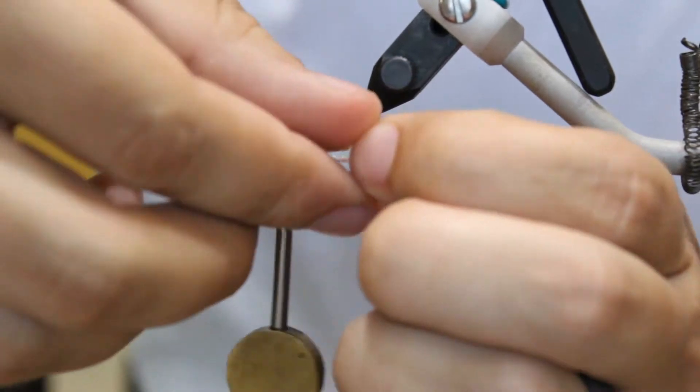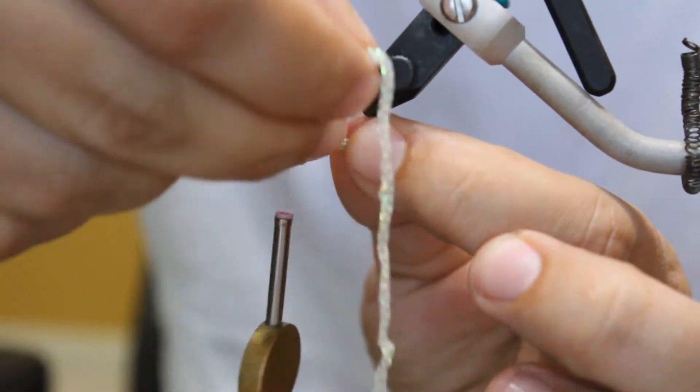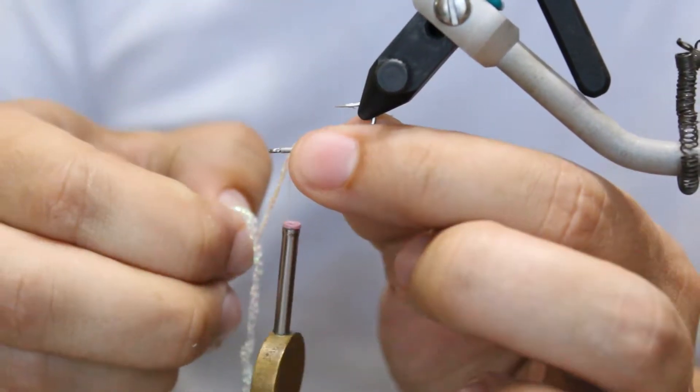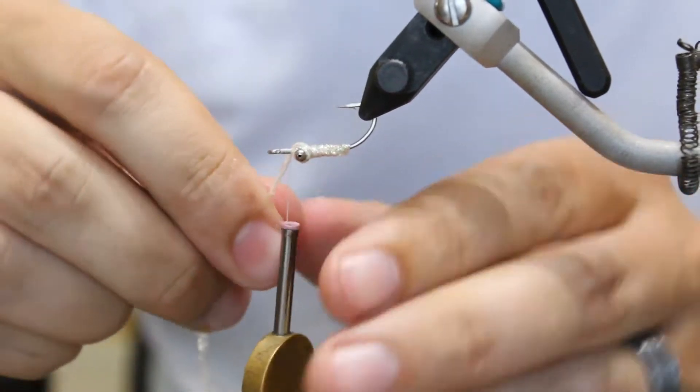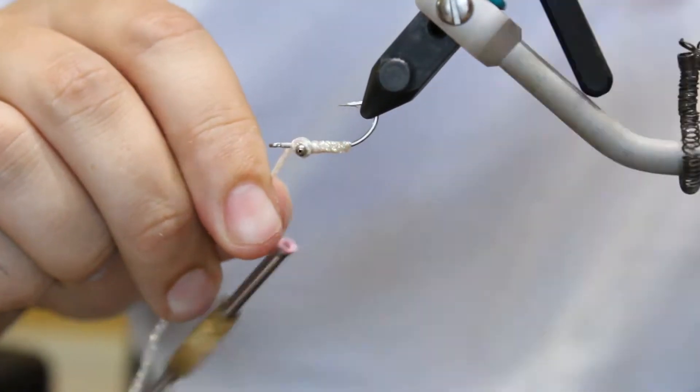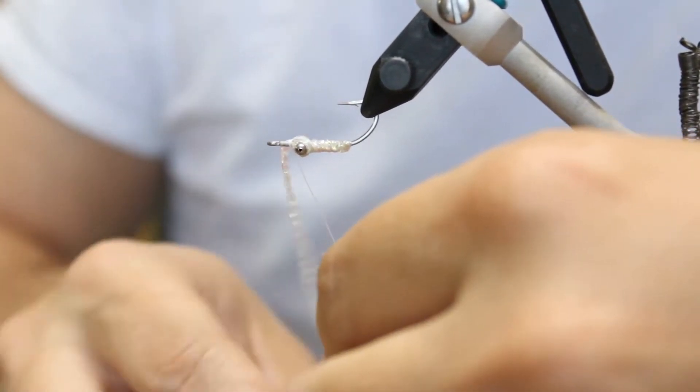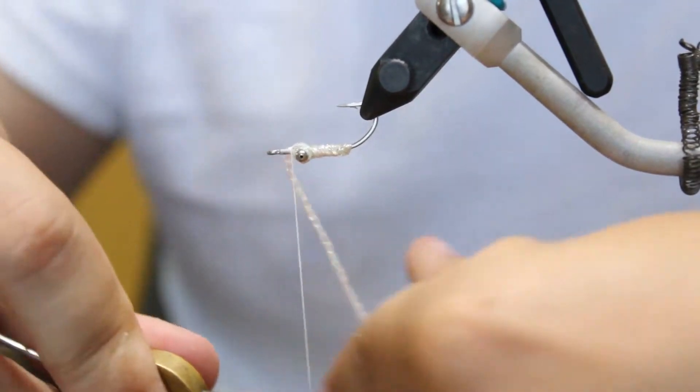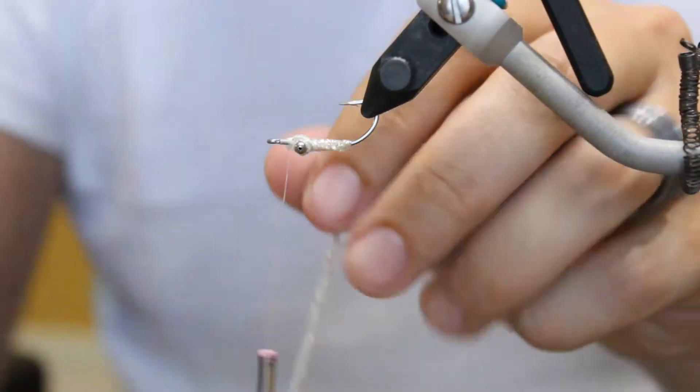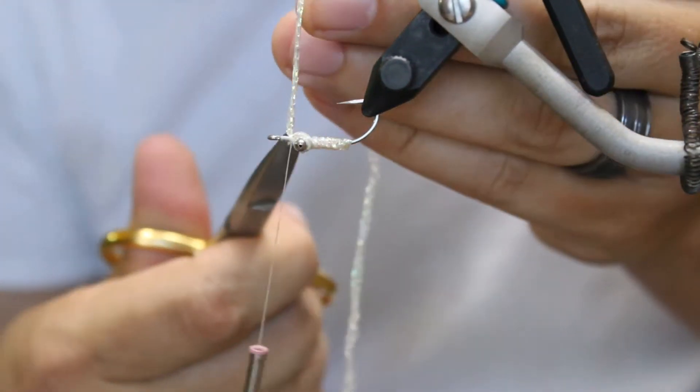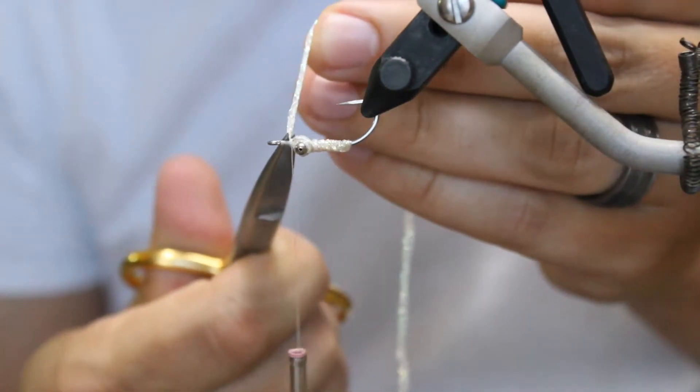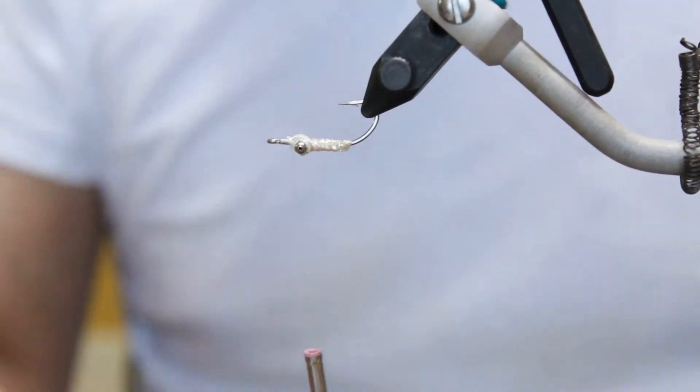So I'm going to wrap it around the eyes of the hook and then I'm going to capture it right here in front of the eyes. Now that we've got it captured really well, we're going to cut it carefully. Always try to cut away from your fly line. Try to pull whatever you're cutting to the other side of the hook.